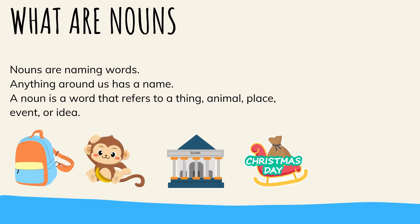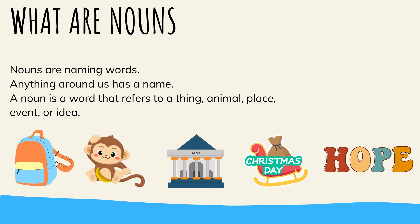The next one is an event — it's Christmas Day. Christmas Day is a noun. Hope is an idea; it's an abstract noun. We will talk more about abstract and concrete nouns in the next lesson.